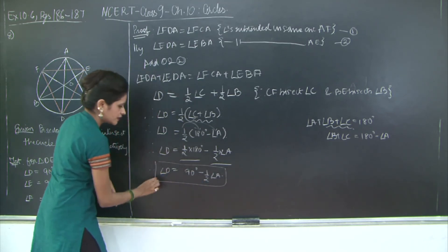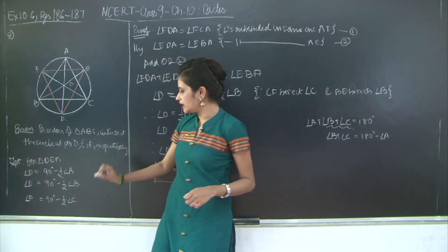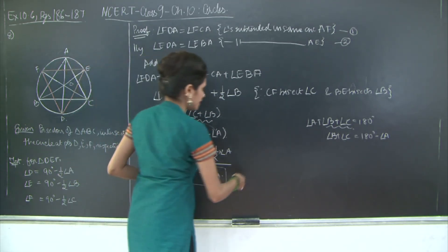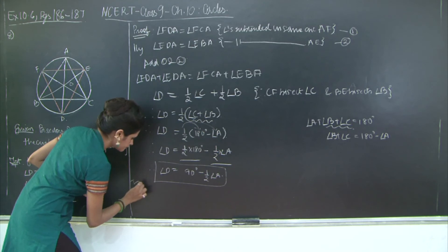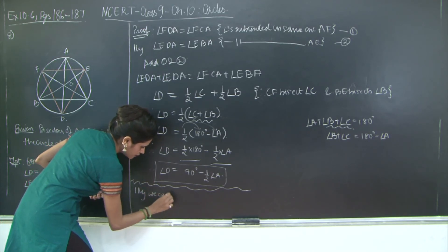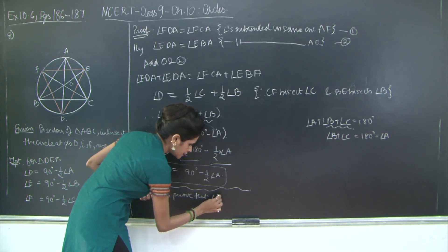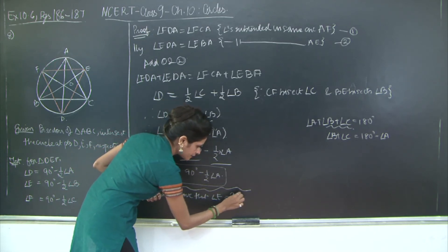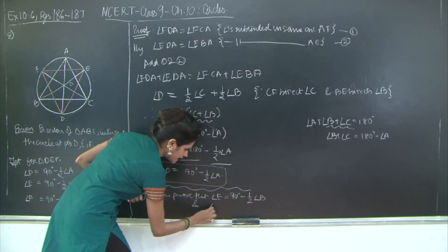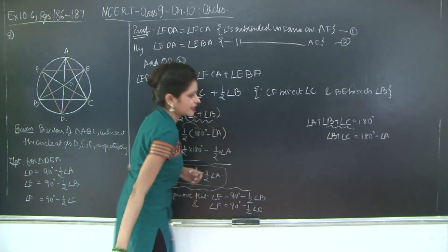So this is the first thing that we proved. Similarly we can prove that angle E is equal to 90 degrees minus half angle B and angle F is equal to 90 degrees minus half angle C. So let's just write that: similarly we can prove that angle E is equal to 90 degrees minus half angle B, and angle F is equal to 90 degrees minus half angle C. Hence proved.